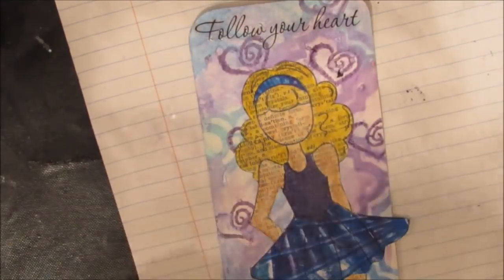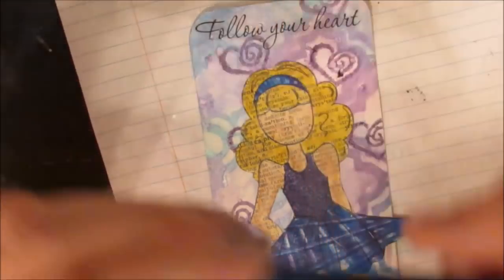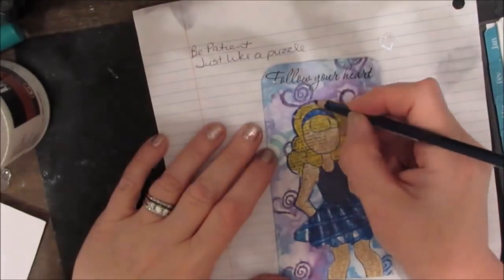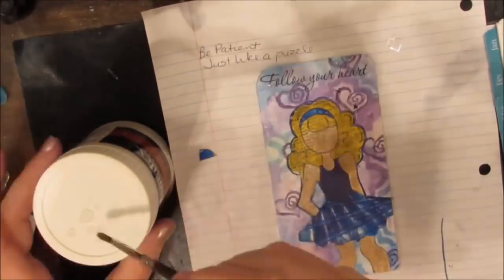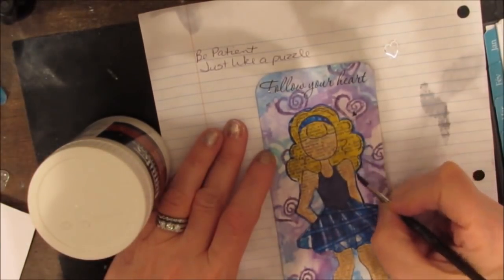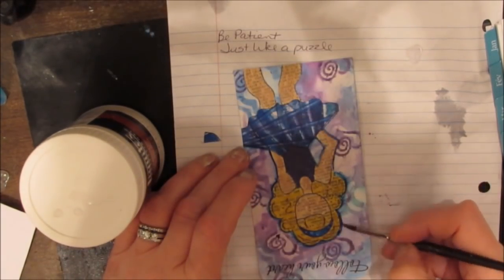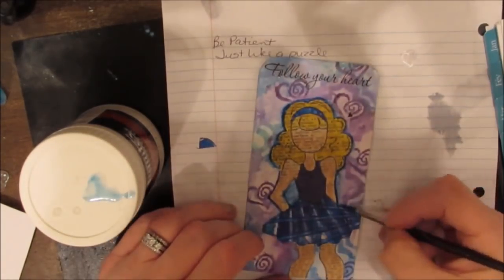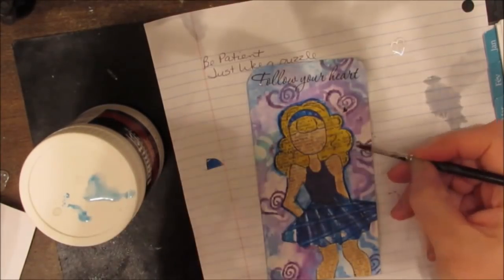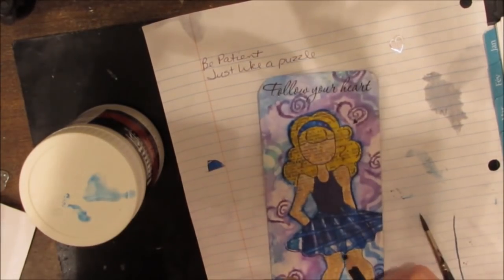Making sure everything's stuck down. Now I have my Stabilo all pencil, but this one is in blue, another find at the art supply store. They had them in multiple colors, and since I do a lot of dark blue and I like edging with blue, I thought this was perfect time to get one of these. So I'm just activating it with water, going around the doll.